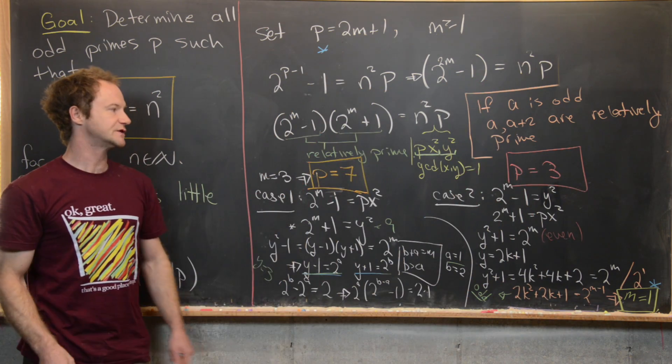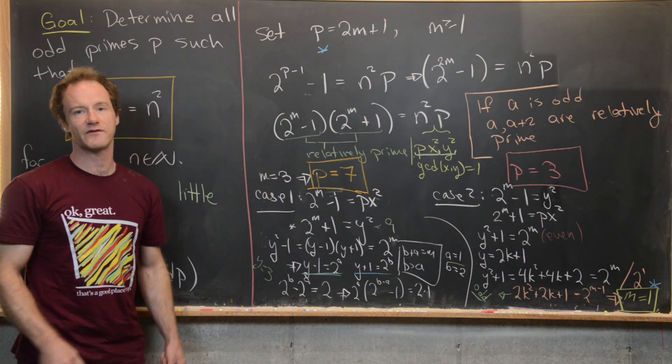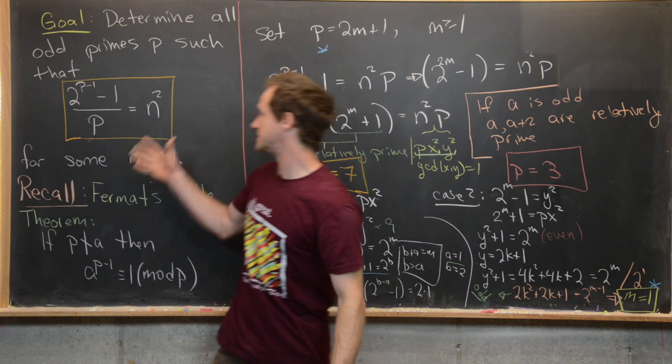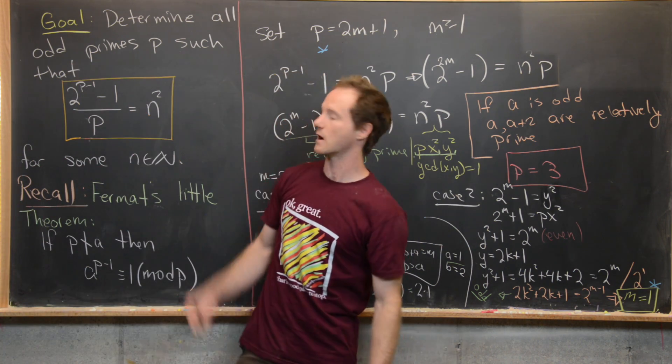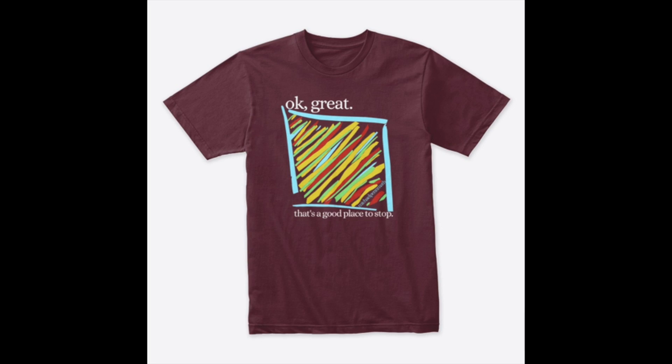So we have found our two solutions: p = 3 and p = 7. These are the only odd primes that make (2^(p-1) - 1)/p a perfect square. And that's a good place to stop.